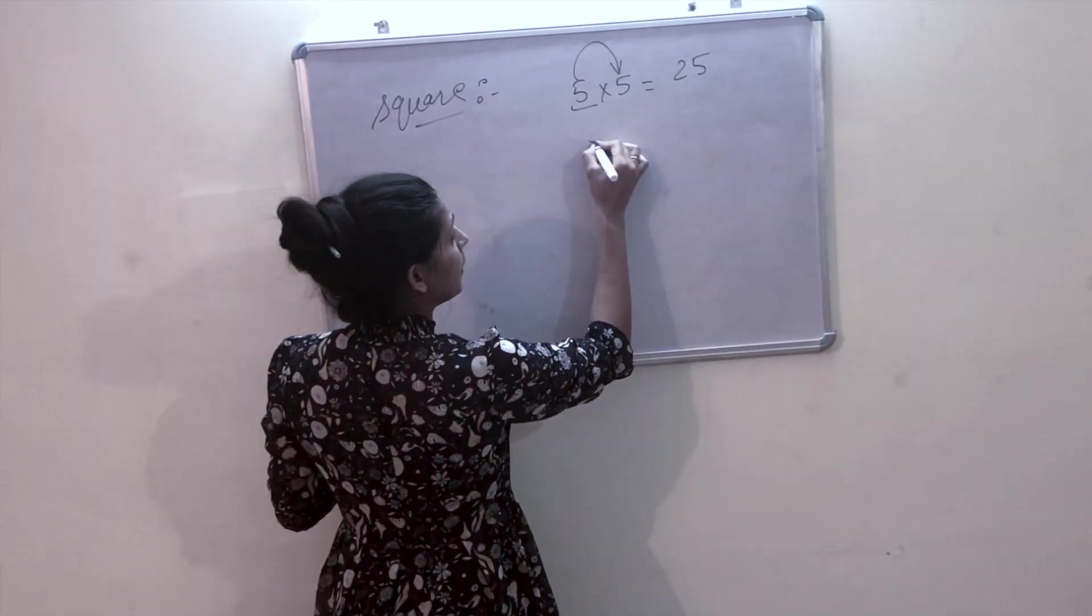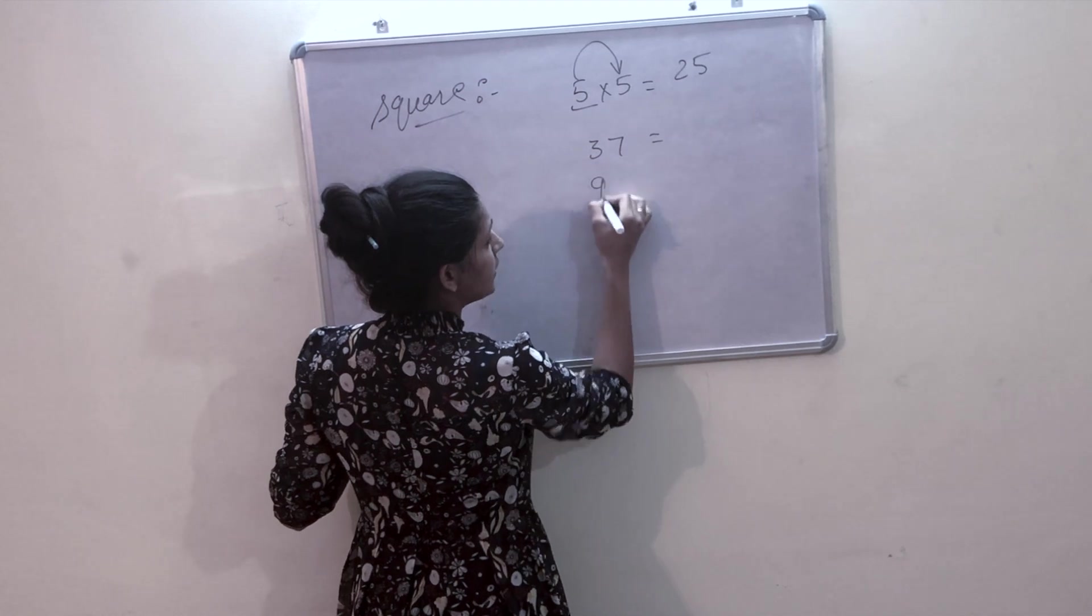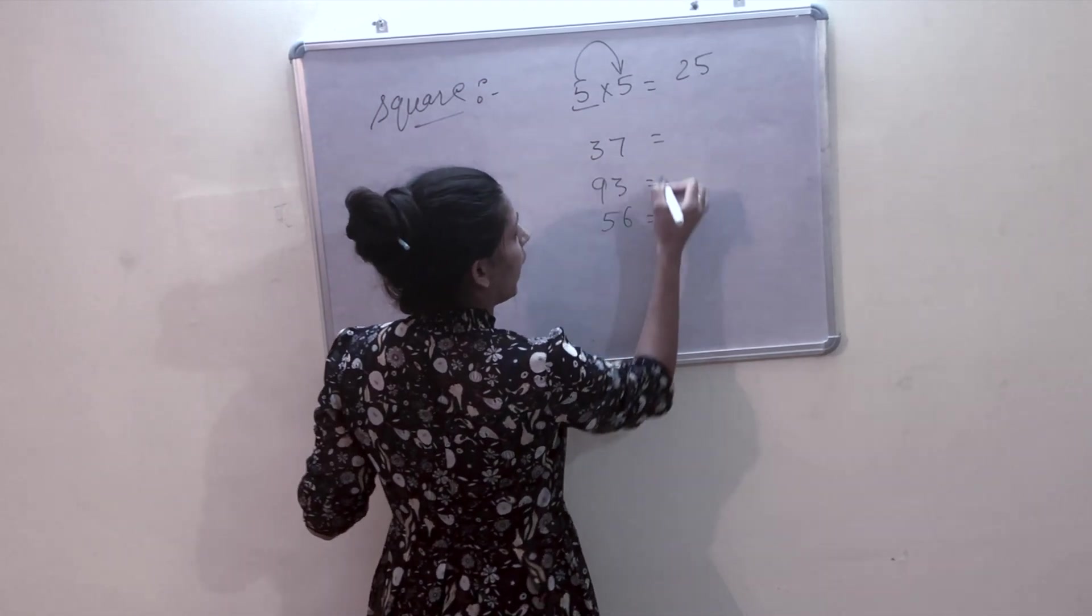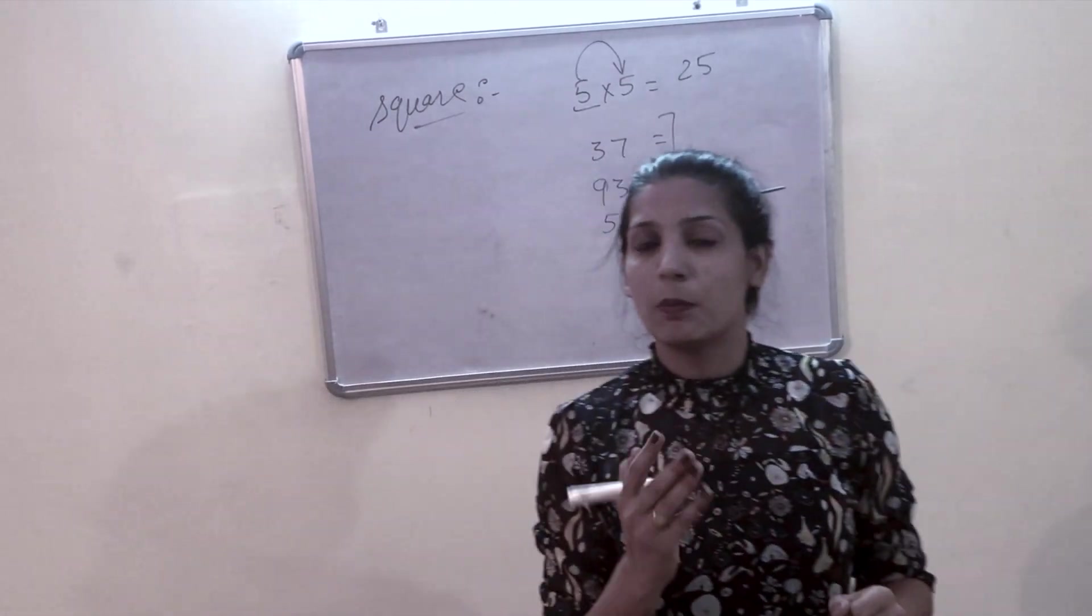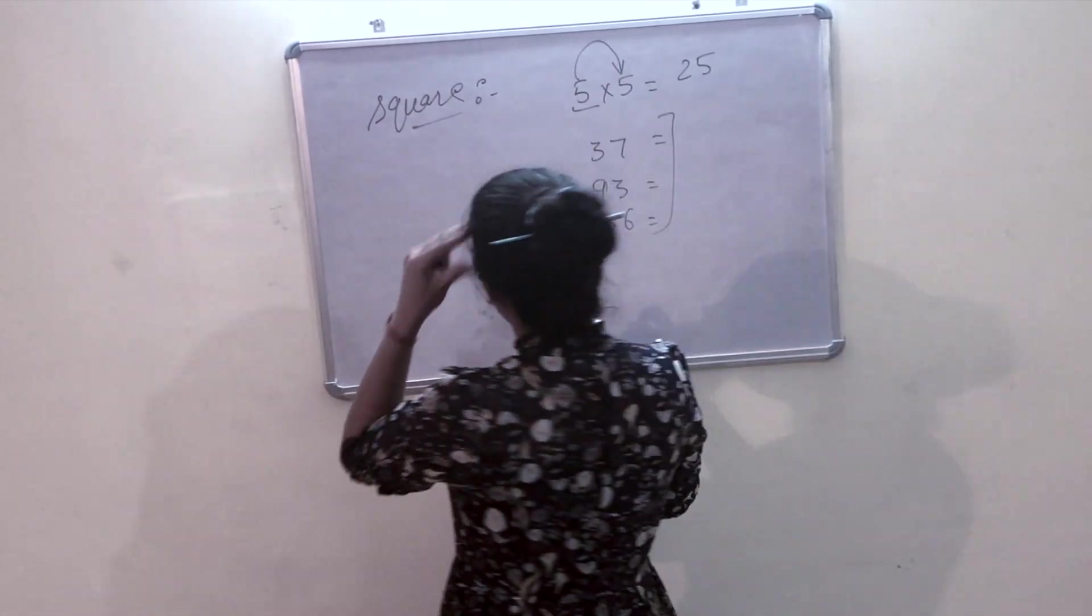But if our number is 37, 93, or 56, the multiplication takes a lot of time. So today we will use a trick.